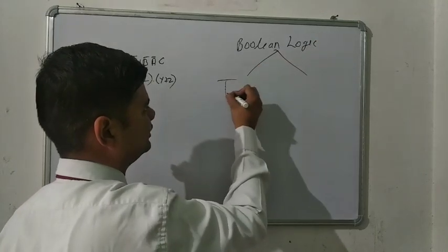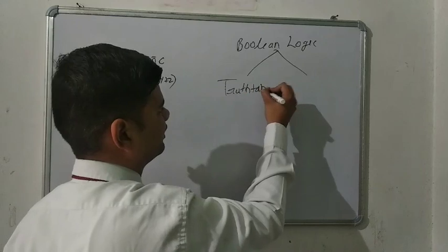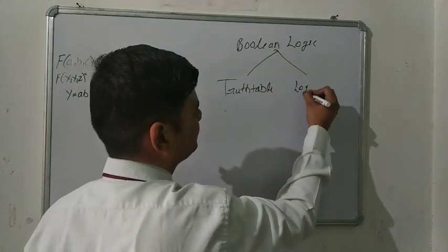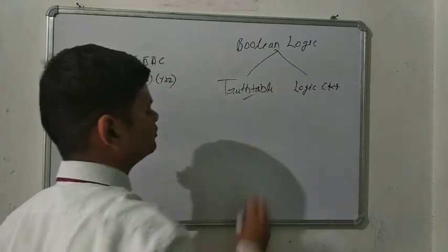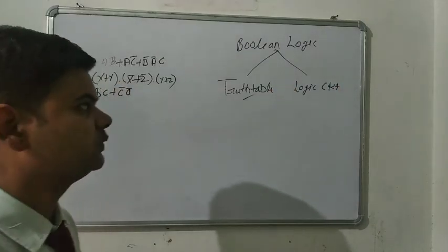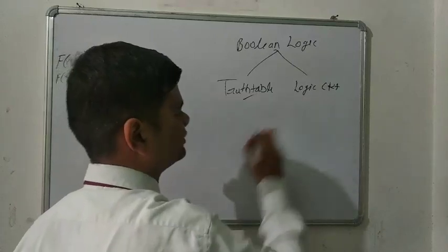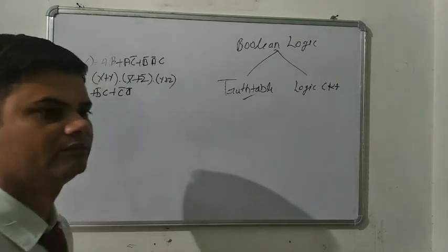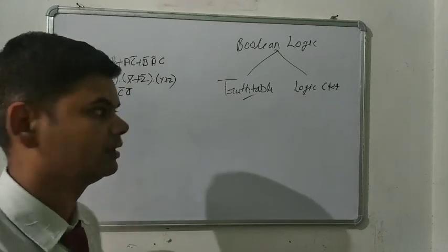The first part is the Truth Table and the second part is the Logic Circuit. So the first part I already completed in the last video, and in this part we have to draw the Logic Circuit. So first we have to revise something about the Logic Circuit.